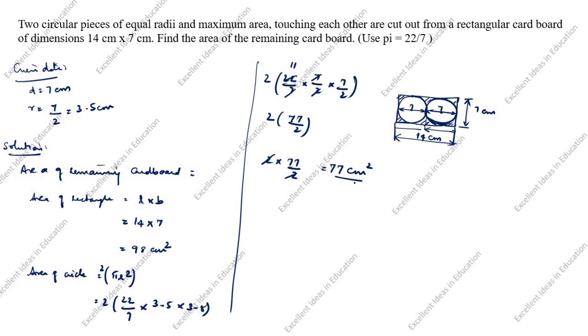Area of remaining? Area of remaining cardboard equal to area of rectangle minus area of circle, area of 2 circles. 98 minus area of 2 circles is 77. 98 minus 77 is 21 centimeter square. Area of remaining cardboard answer is 21 centimeter square.